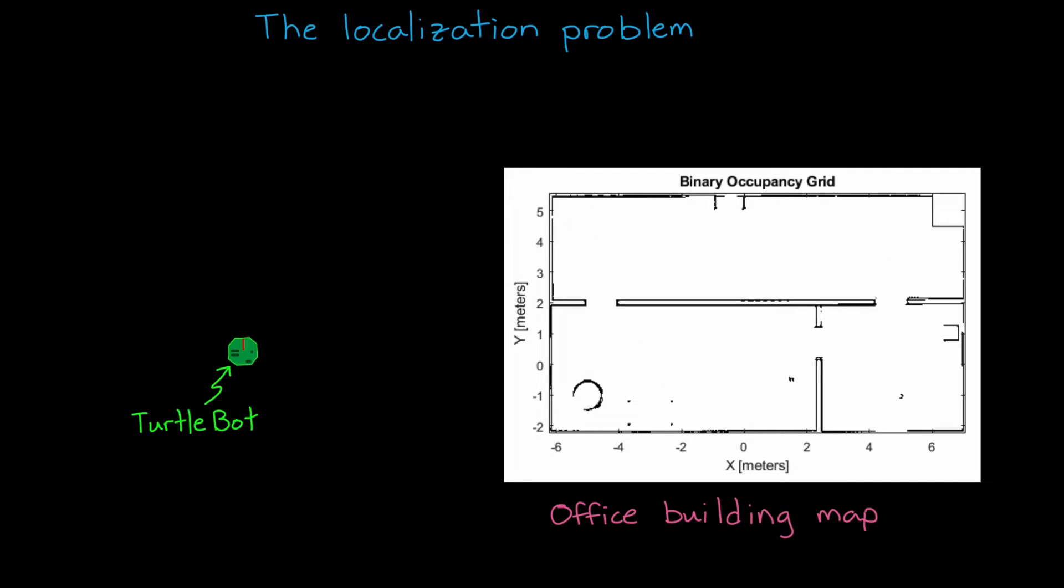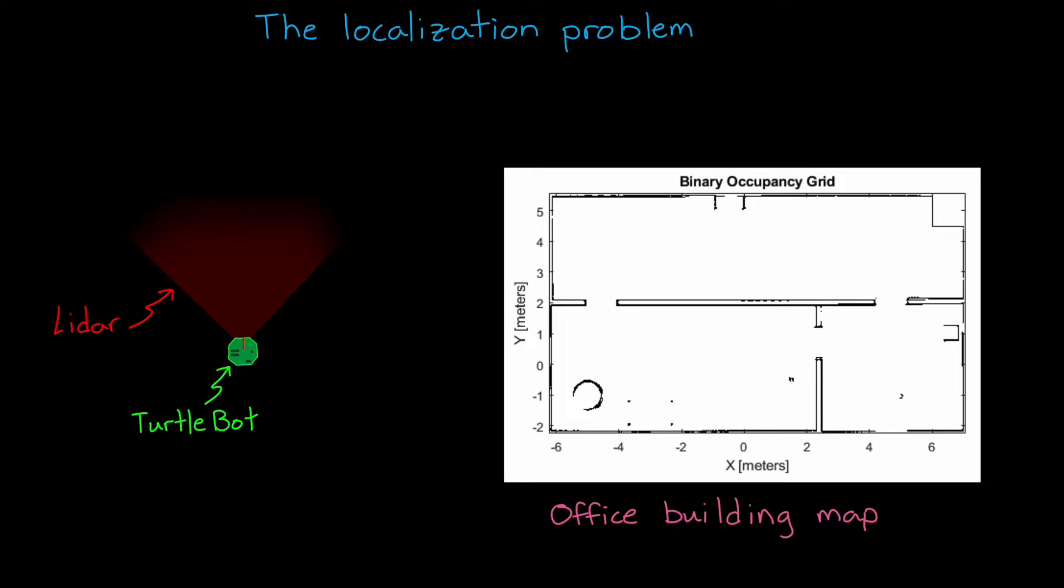This robot has a LiDAR sensor that returns the distance to objects within the field of view. So if the sensor is looking at a corner and two doors, it might return a point cloud of dots that looks something like this. But measurements are actually noisy, so it really might look something like this. Now, we can match this pattern to the map of the environment and determine where the robot is.